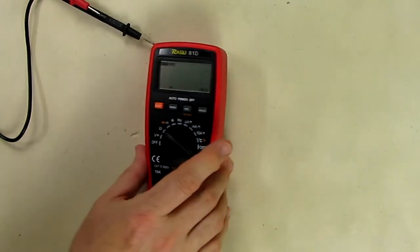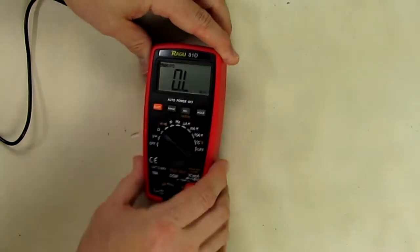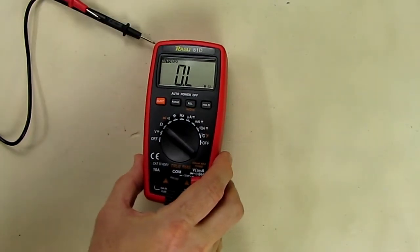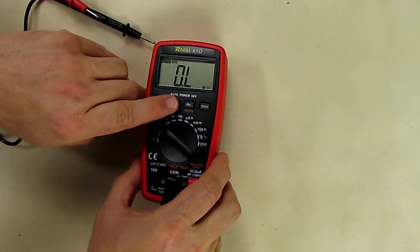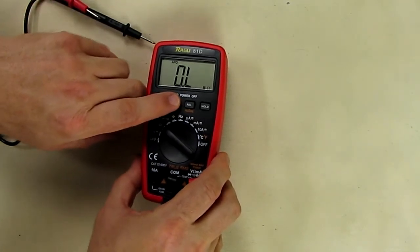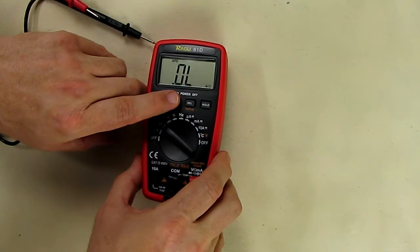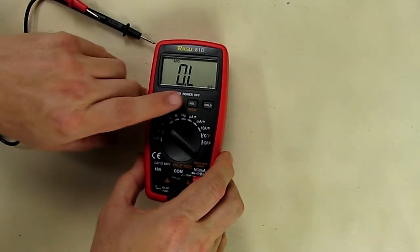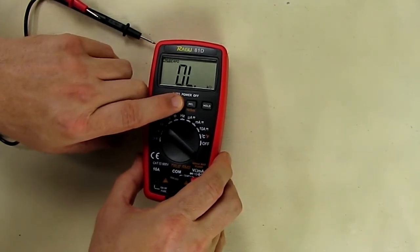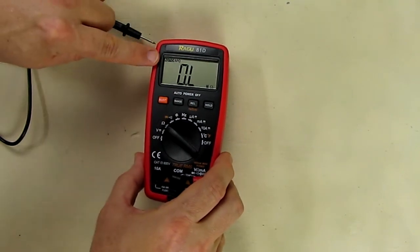Now if we go to ohms, right now by default it goes into the auto mode. If you hit the range button then you can manually walk through the different ranges as you want to do it that way. If you want to put auto range back on you just hold this down and auto range comes back on.